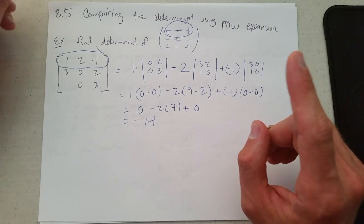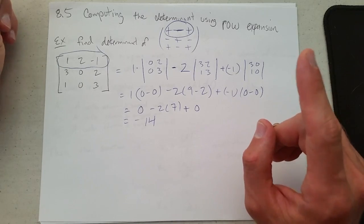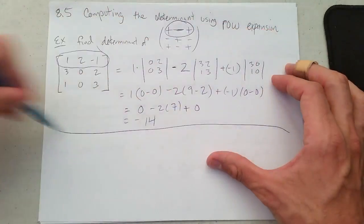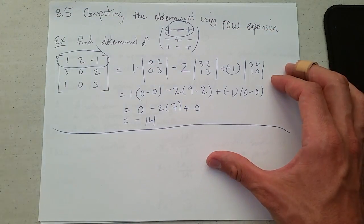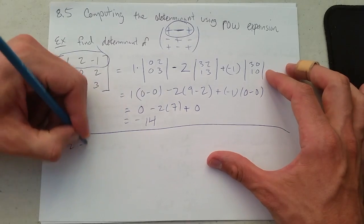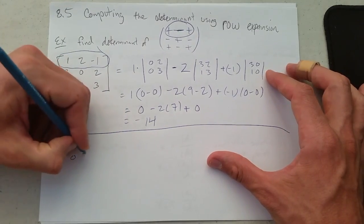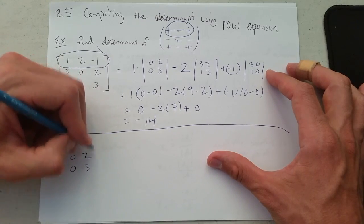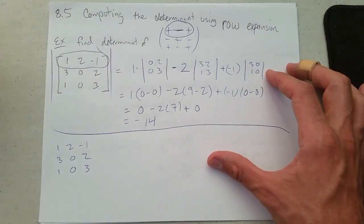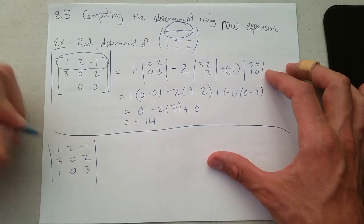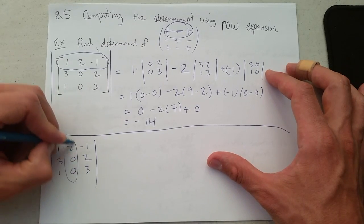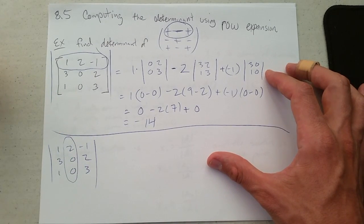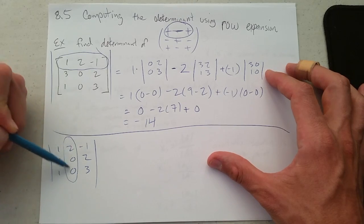The way we're going to get these a little bit easier is we're going to be clever about what row or column that we expand across. So we'll do the exact same problem, except we're going to expand across column 2. Why is column 2 good? Because it has two 0s in it.